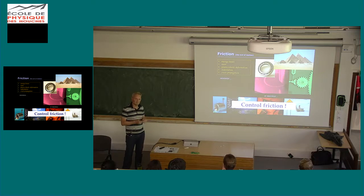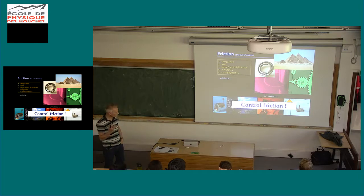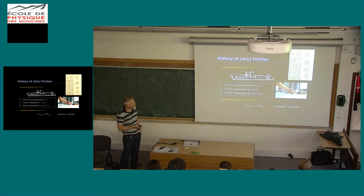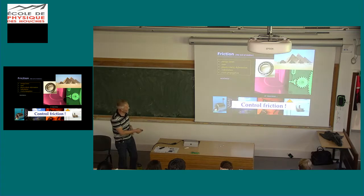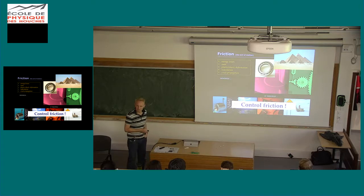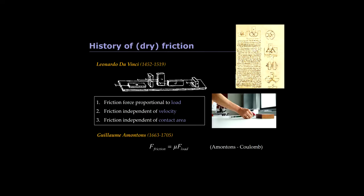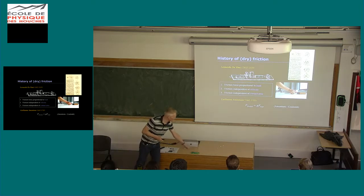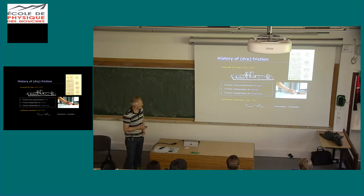Depending on the specific situation, you want friction to be large or small. As physicists, if we want to control something we should understand it. The first person who systematically studied friction — and I'm sure the Egyptians were concerned about it too — was Leonardo da Vinci. He was doing experiments like pulling a piece of wood with a rope across a table.